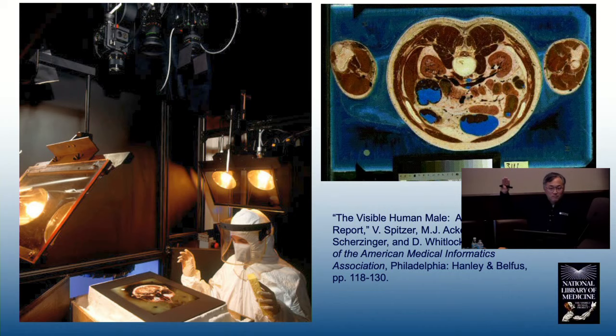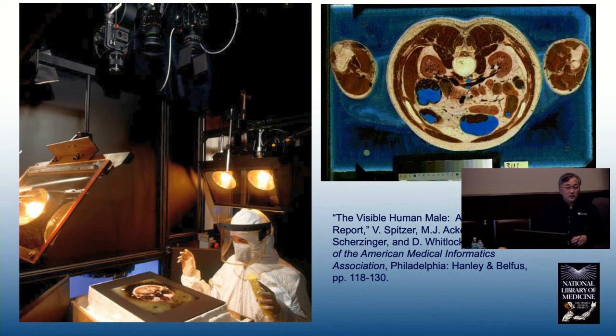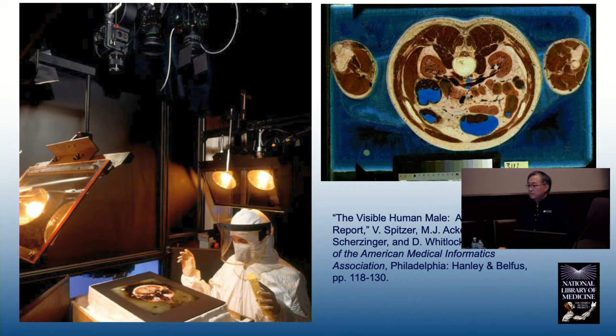We imaged, we made a contract to the University of Colorado at Denver. And they built a machine, a cryo-macrotome. If you see this device here, you see those teeth on that rotating wheel. It's capable of cutting through a block of ice. The subjects were embedded in ice. And they were planed off one millimeter at a time for the male, one third of a millimeter at a time for the female. If the male is about two meters tall, that's 2,000 images of the inside of a human being that were acquired.